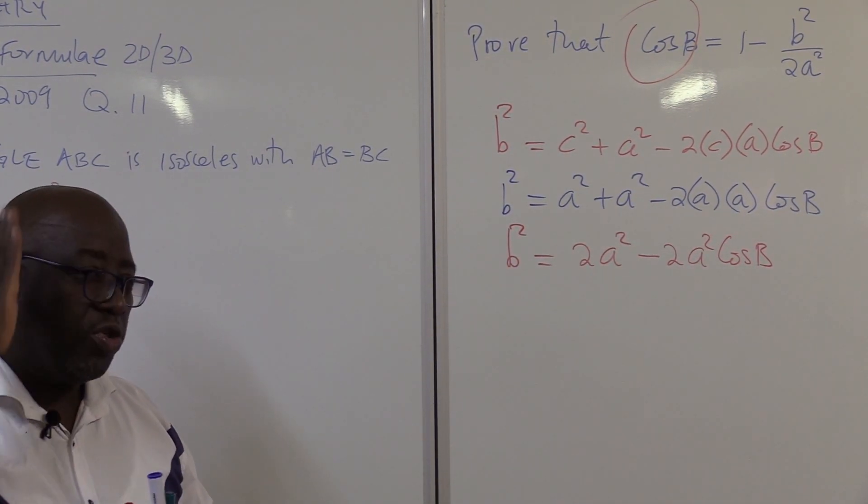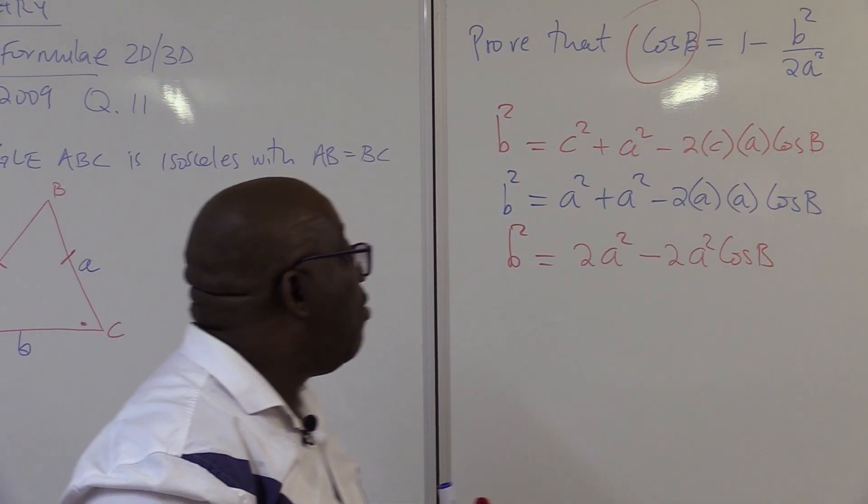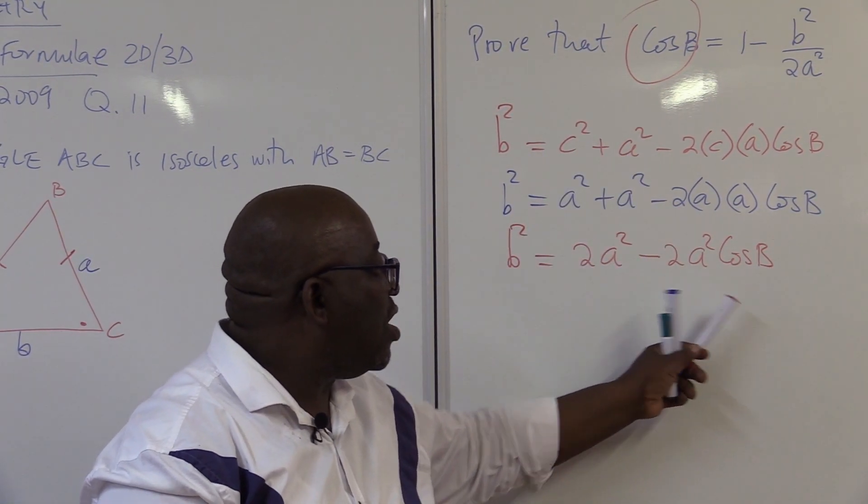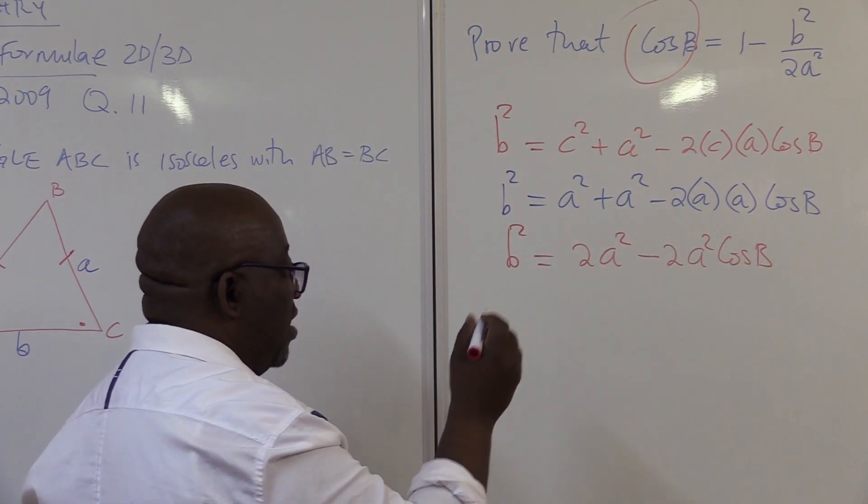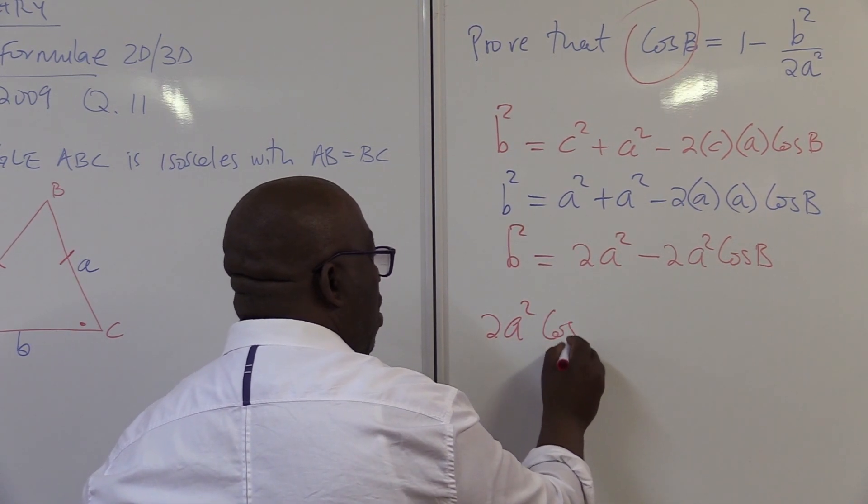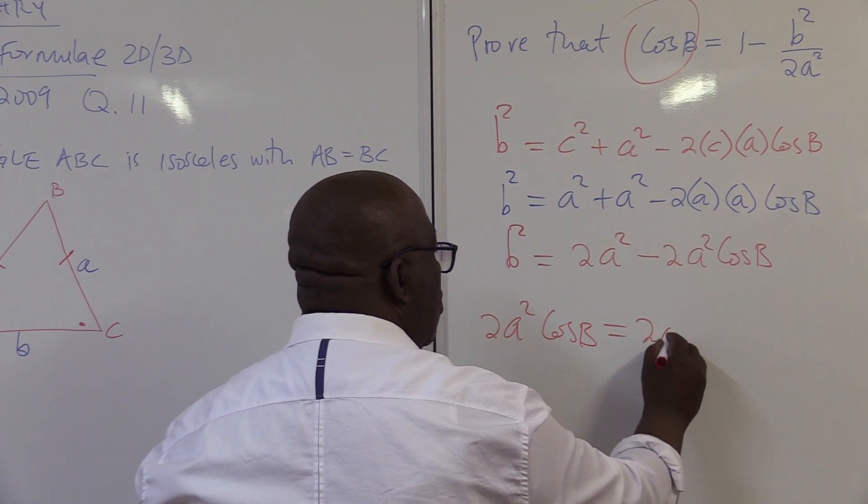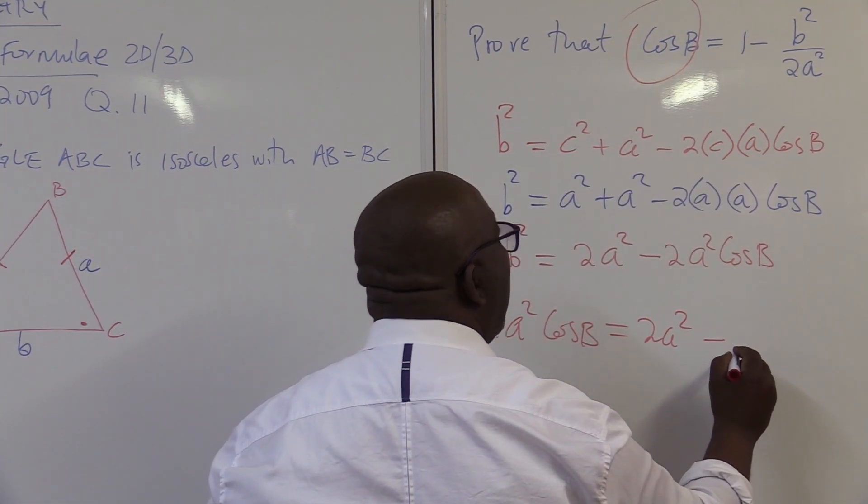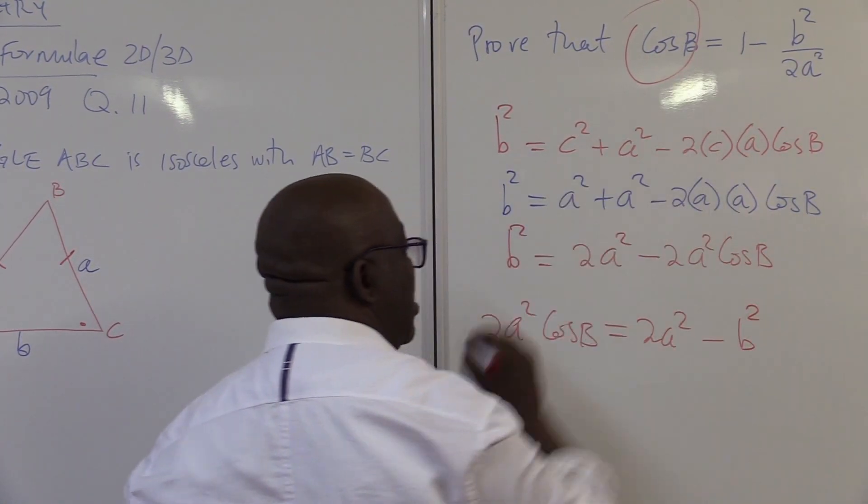As I'm working, I'm also looking at what I want to get. I want to get this one at the end of the day. Okay. It starts with cos B, and it is negative. So if I take this and put it this side, it will be positive. Let's do that. It will be 2A squared cos B is equals to, I've got this 2A this side, 2A squared. Take this B this side. It will be minus B squared. This B squared. It's starting to show up.